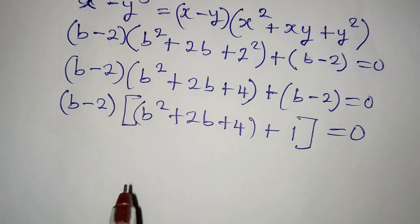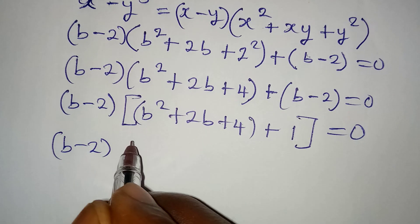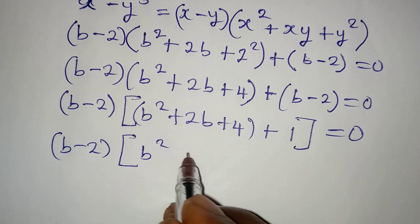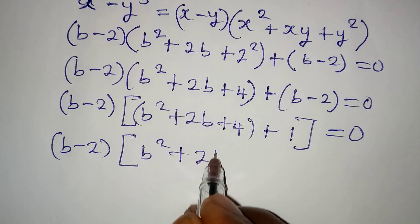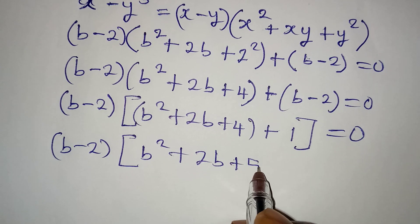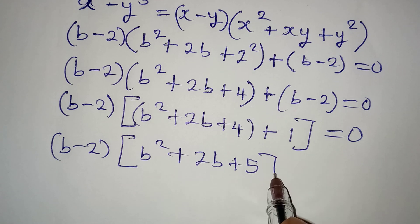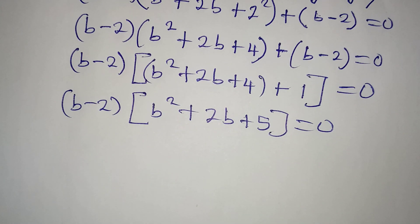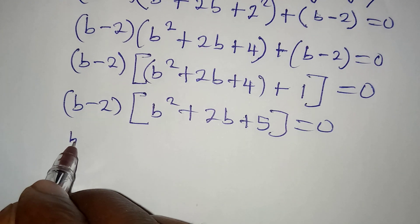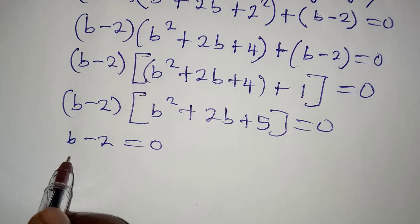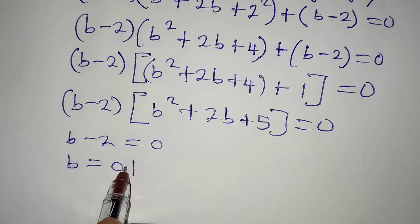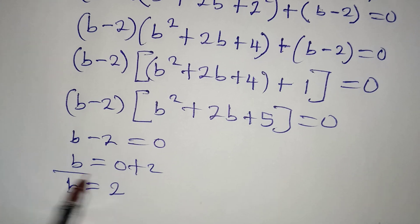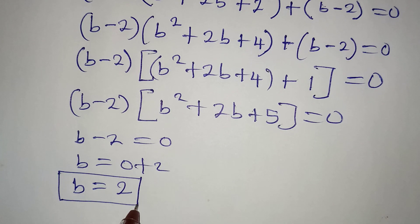So we have b minus 2 as the common factor, and in the second bracket we have b squared plus 2b plus 5, because 4 plus 1 is 5, all equal to 0. Now applying the zero product property: b minus 2 equals 0, so b equals 2. This is the first value of b.